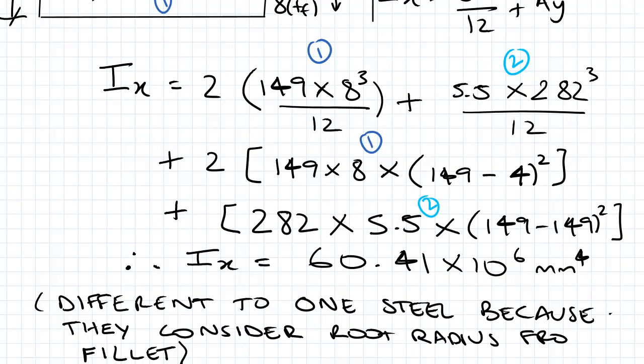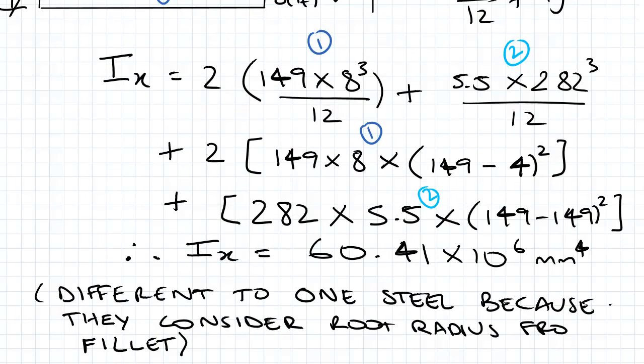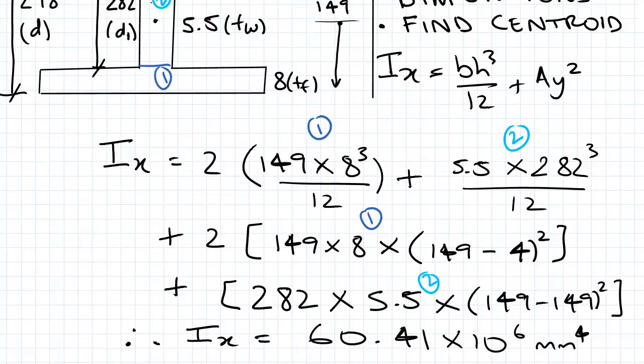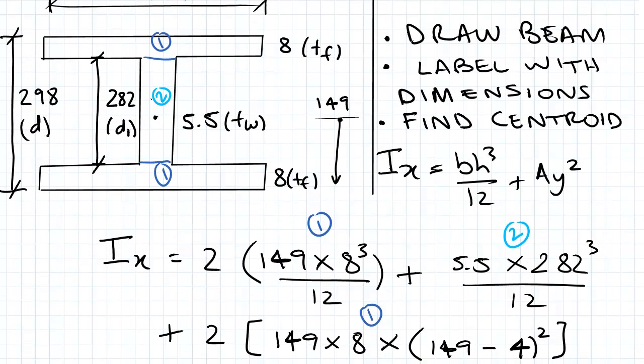Now one thing I want to explain is it's different to one steel because they consider the root radius, this I should say for a fillet. That's not something we've considered here, so when I say that what I mean is they consider this shape here.